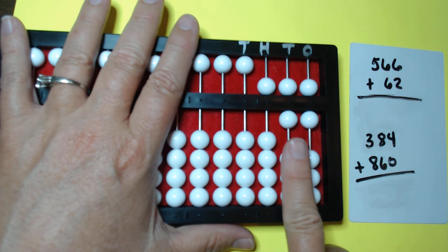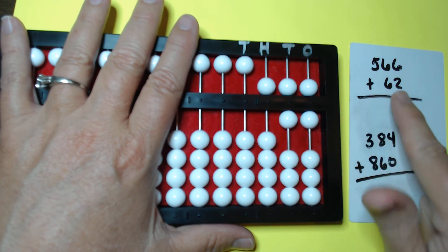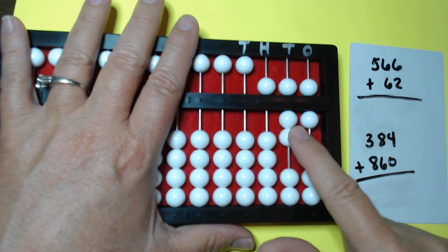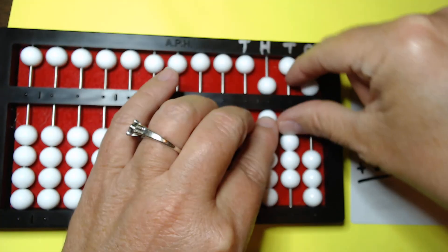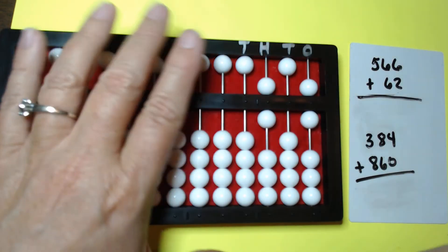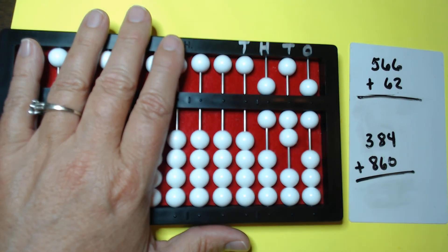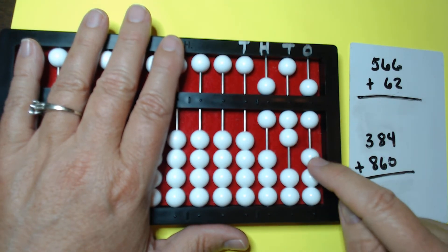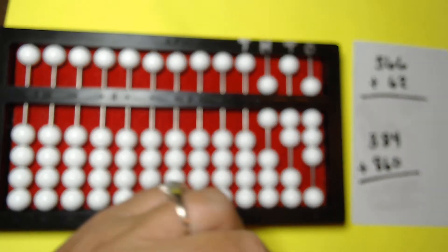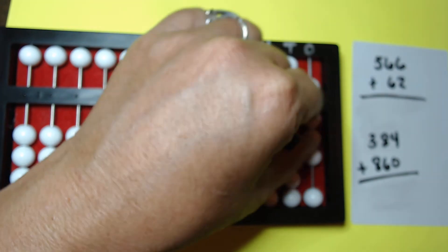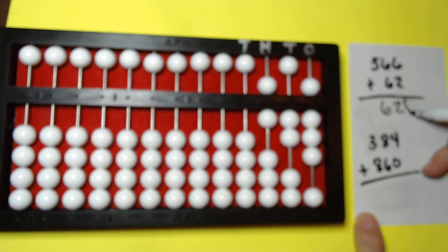So we're going to go to the tens column and we're going to add the six beads. 1, 2, 3. We're out. We have to make the exchange. 4, 5, 6. And then we have to add the 2. 1, 2. And that gives us 628.